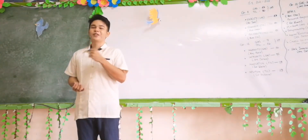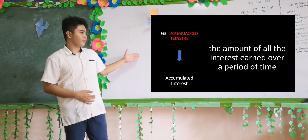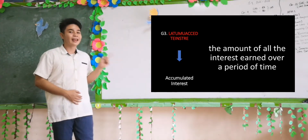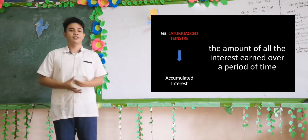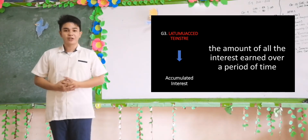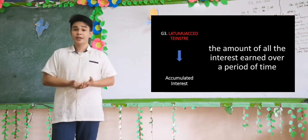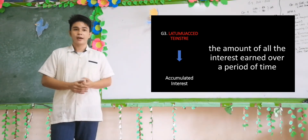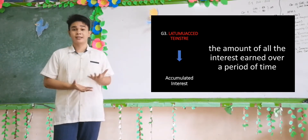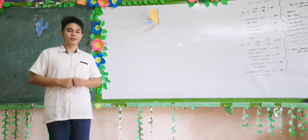Now let's have group three. Their jumbled words, arranged answer, and definition — accumulated interest — are all correct. Accumulated interest is the amount of all interest over a period of time. For example, over a span of 10 years, if in one year you have 100 pesos interest, then 10 times 100 equals 1,000 — meaning you have 1,000 pesos interest over the given 10-year period. Good work, group three.